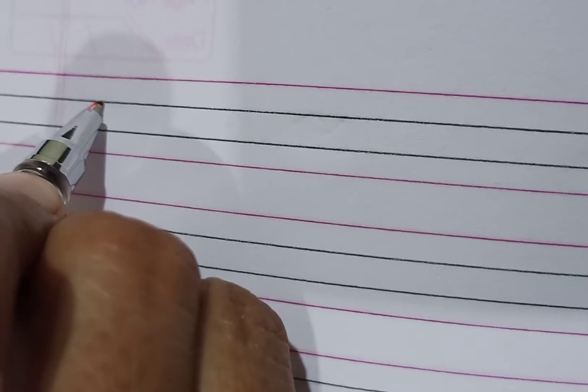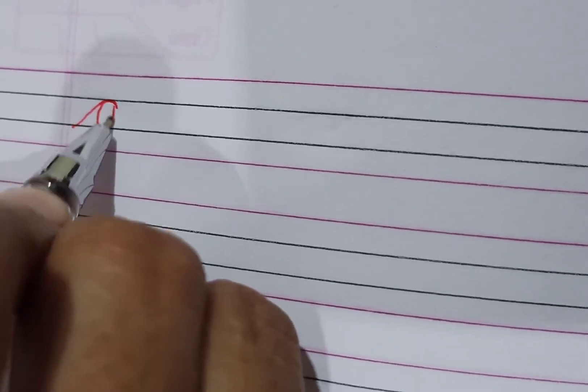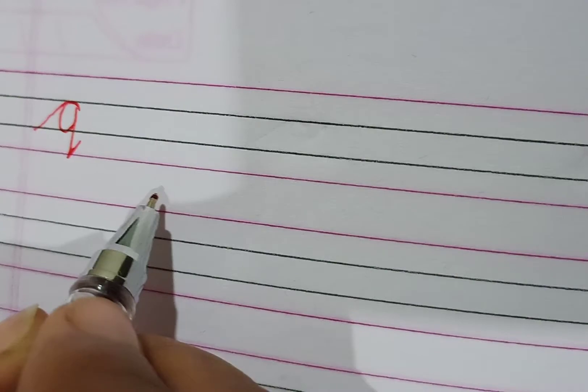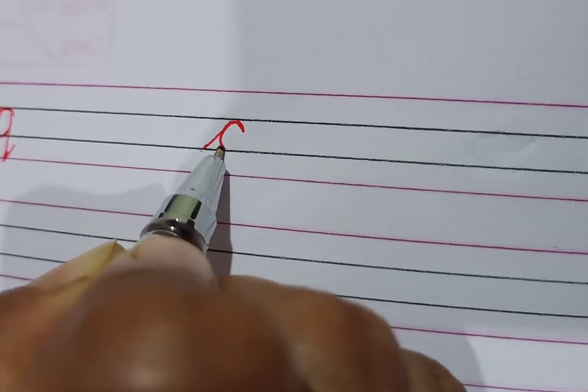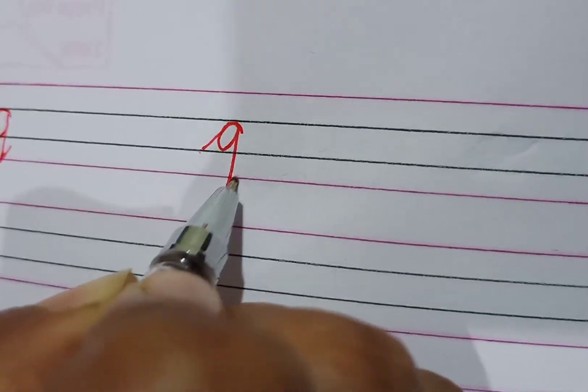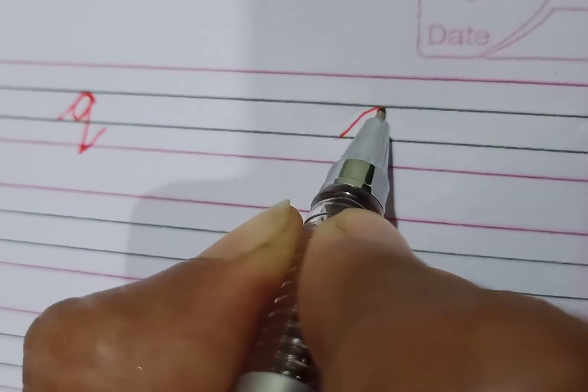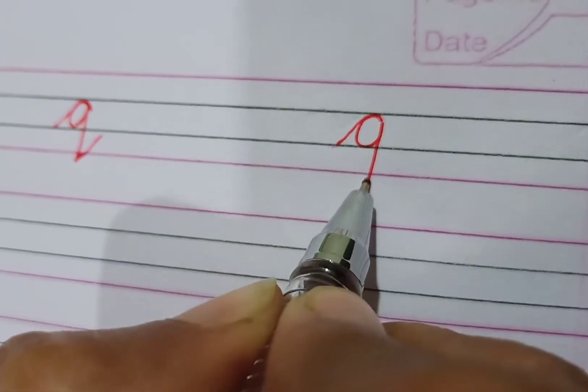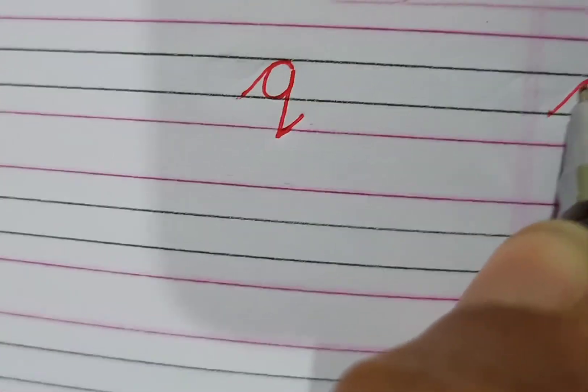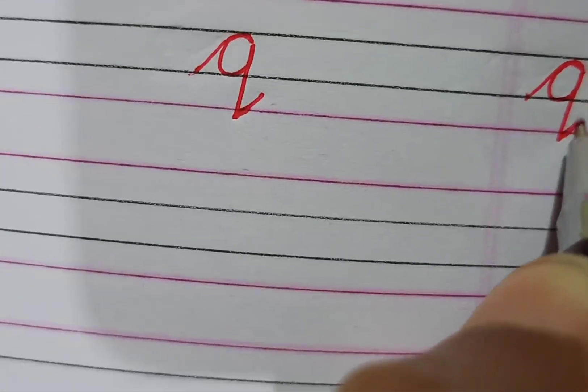We wrote on the board. Again, I will show you q in the notebook. So here, this is your q. Q for quill, q for quill, q for quill.